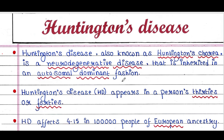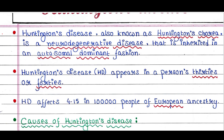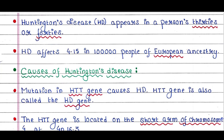Huntington's disease, or HD, appears in a person's thirties or forties. HD affects 4 to 15 in 1 lakh people of European ancestry.